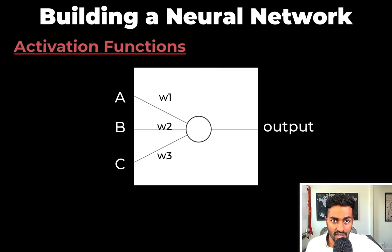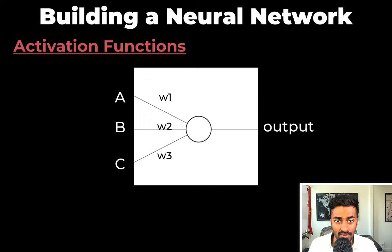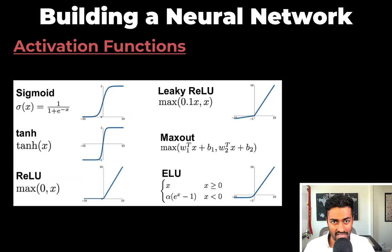So moving on to activation functions now. So here's a diagram of a neuron. It has inputs A, B, and C and weights W1, W2, W3. The neuron function is a function of some of products of inputs and their edge weights. And this function is an activation function. And it can typically be one of these.